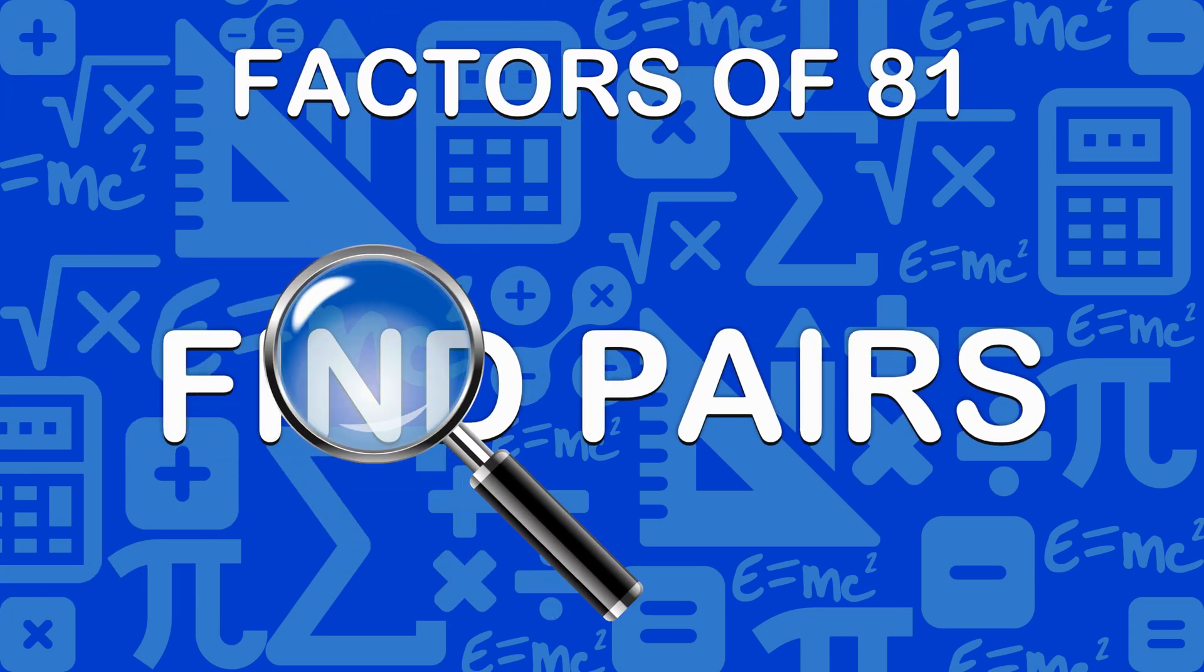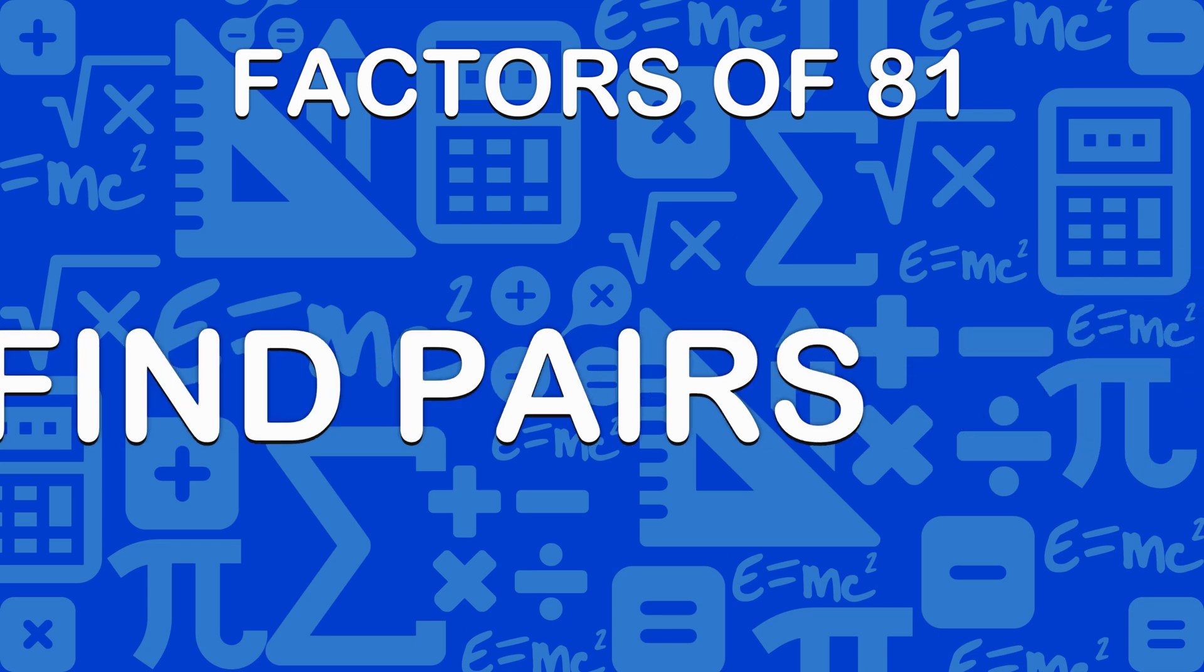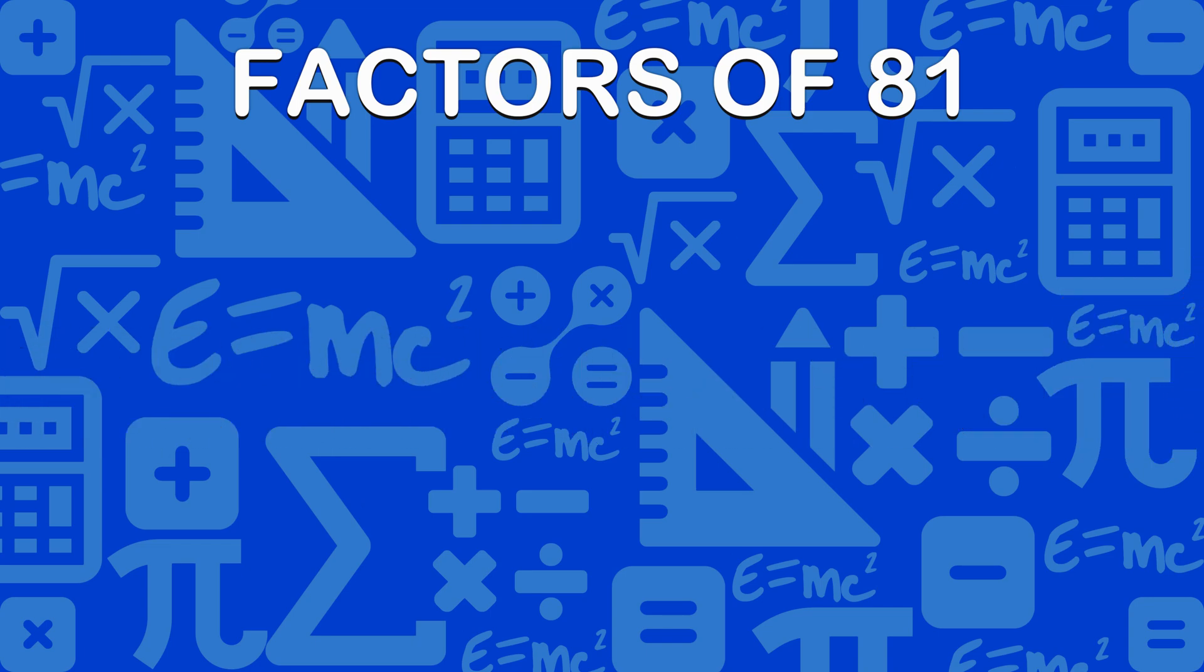Firstly, we will find pairs of factors. Pairs are numbers that multiply to the given number. Here are pairs of factors of 81: 1 and 81, 3 and 27, 9 and 9.